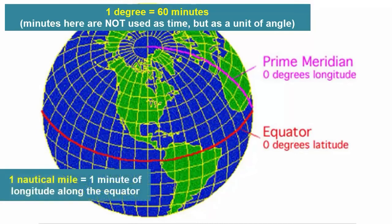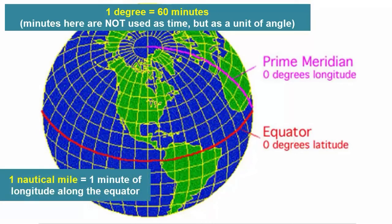One minute of longitude, as measured along the equator, is equal to one nautical mile. Why the equator? That's the maximum distance of longitude that one minute or one degree of any interval will have.